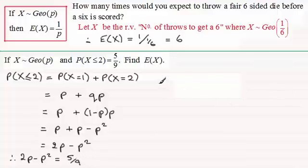So if I just border this off here, then we know that if we multiply both sides by nine now, we must therefore have nine times 2P is going to be 18P, minus nine times P squared, so that's nine P squared, equals five.